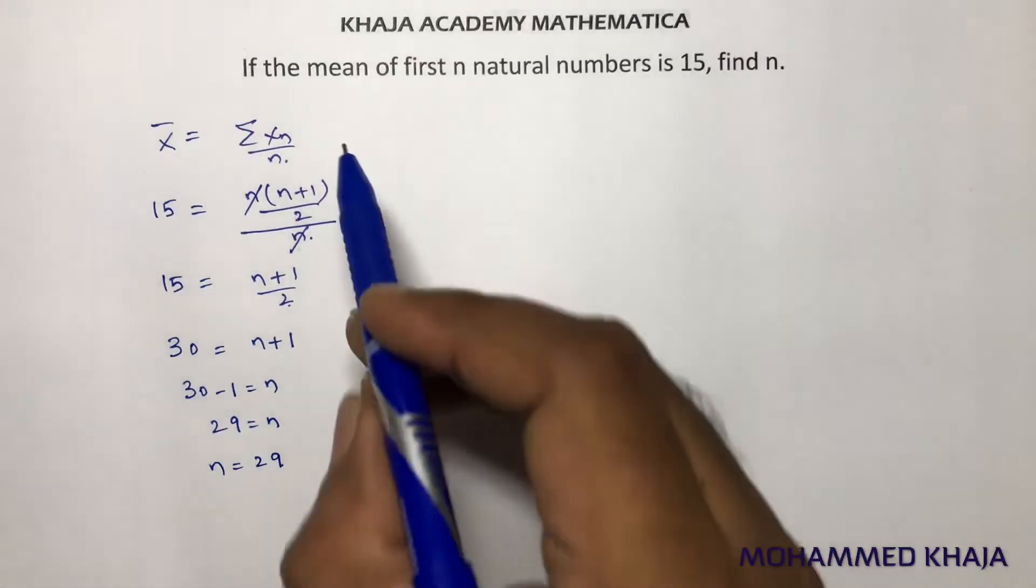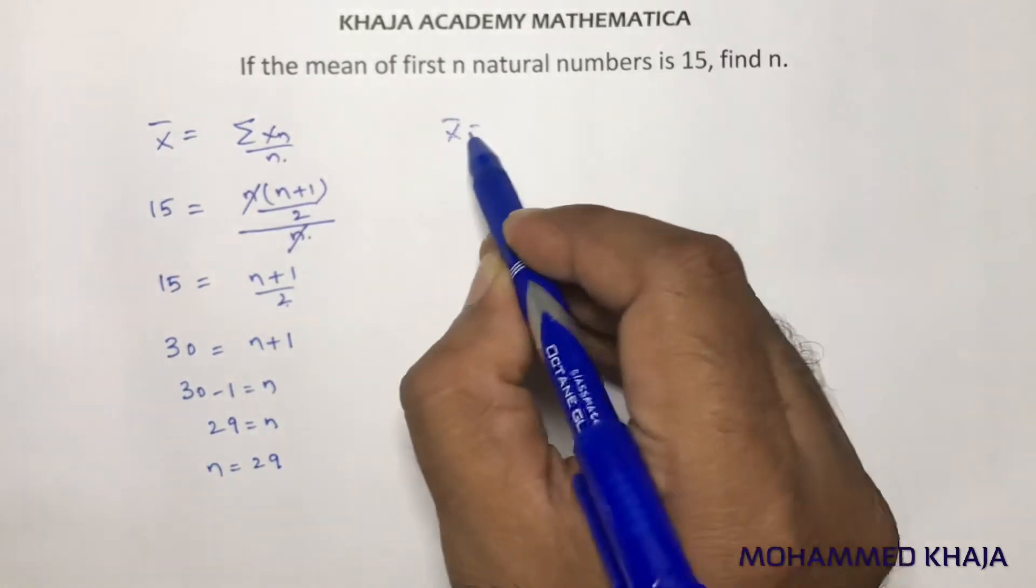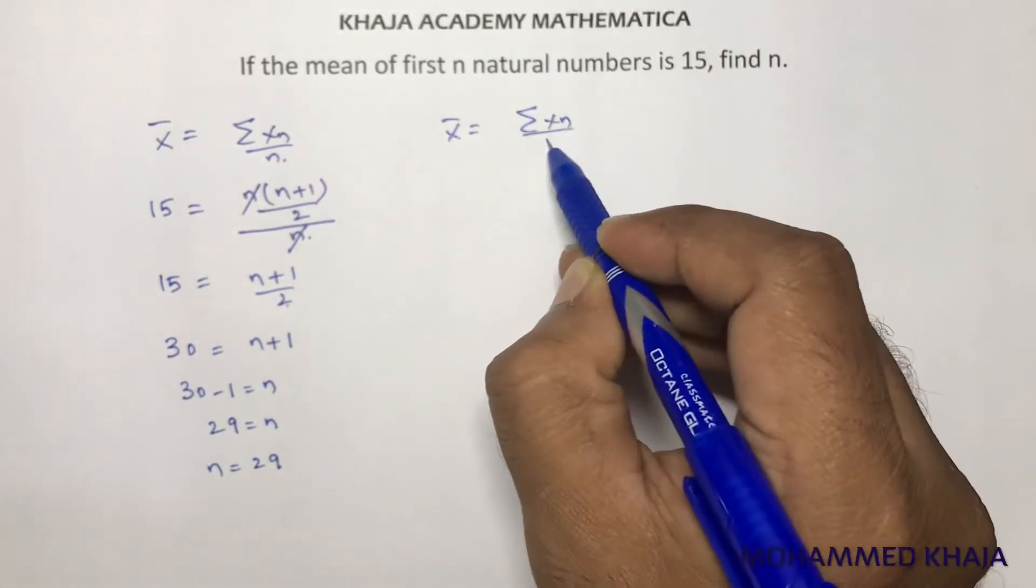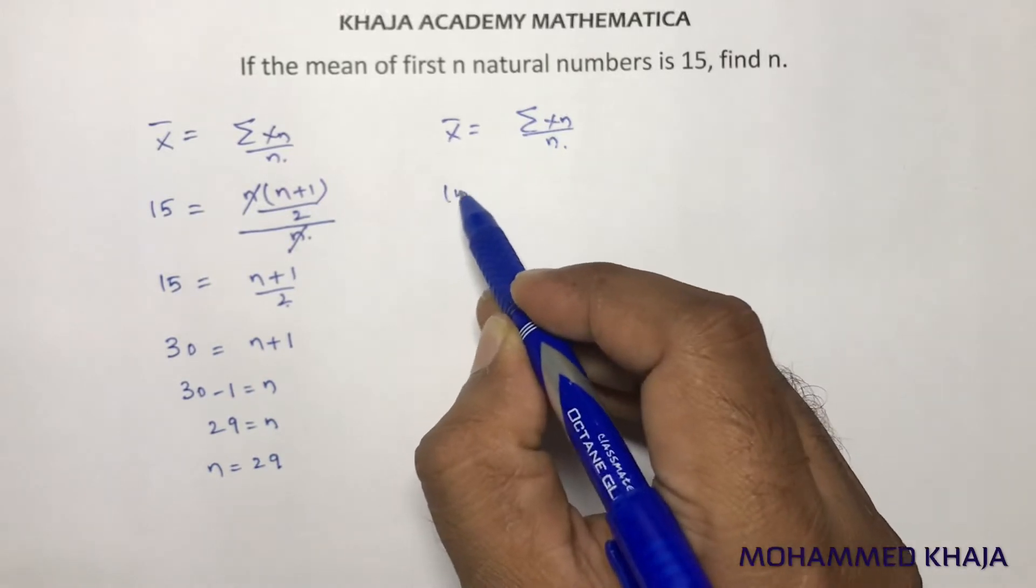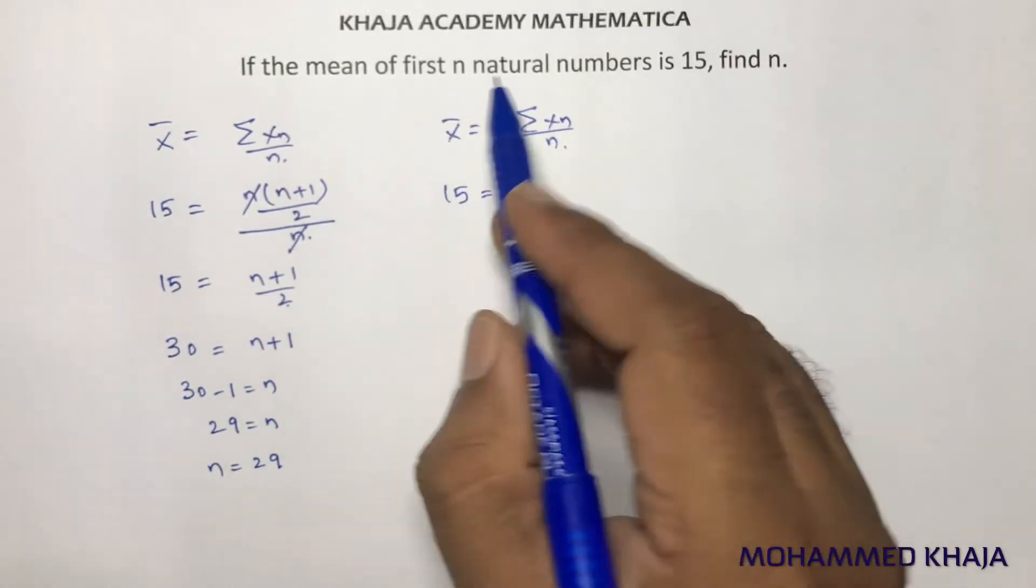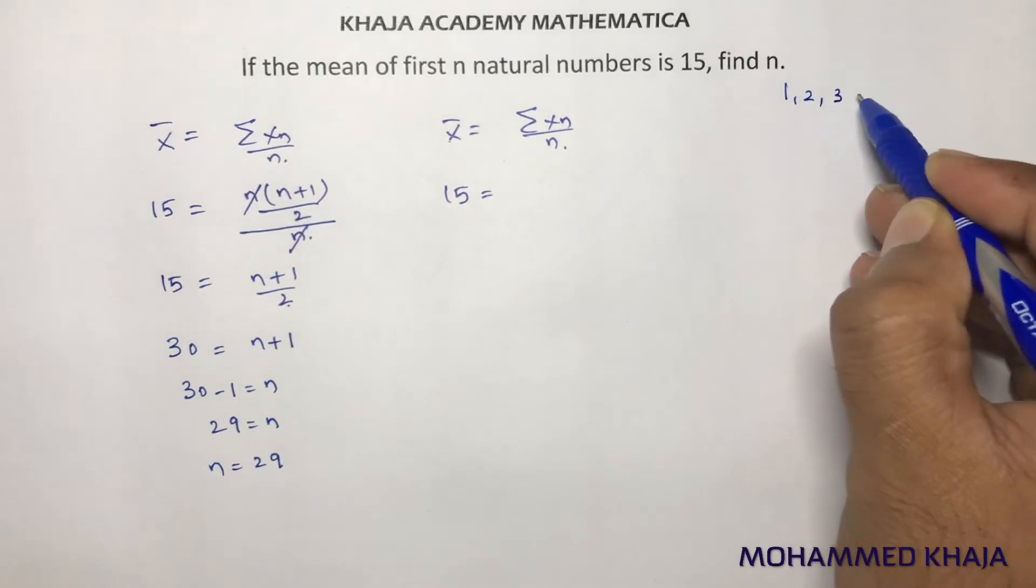You can do this in another method. Mean equals sum of observations by number of observations. Mean is 15. Sum of n natural numbers, where natural numbers are 1, 2, 3, and so on.